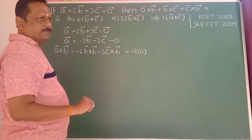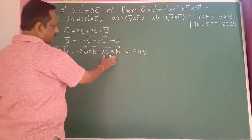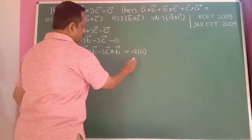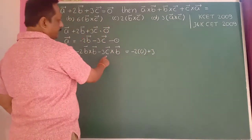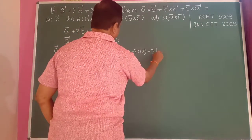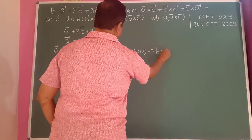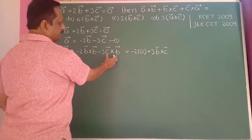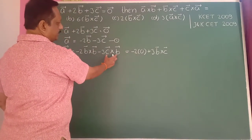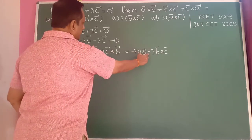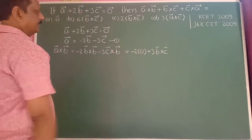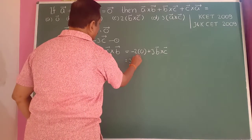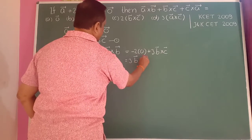Using the property of cross product: if we interchange the vectors, the sign changes from minus to plus. So minus 3 into c-bar cross b-bar becomes plus 3 into b-bar cross c-bar. Therefore a-bar cross b-bar equals 3 into b-bar cross c-bar.